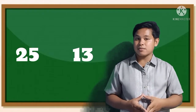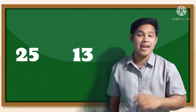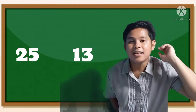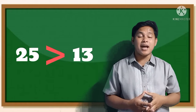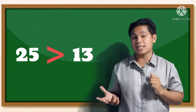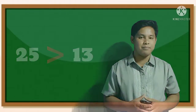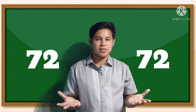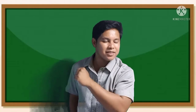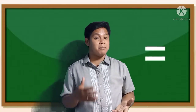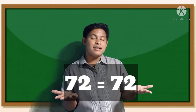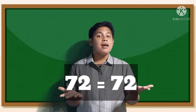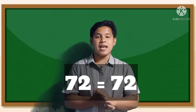What about 25 and 13? What symbol are we going to use? We're going to use greater than, because 25 is greater than 13. What about 72 and 72? What symbol are we going to use? We're going to use equal, because 72 is equal to 72 — meaning they have the same value.